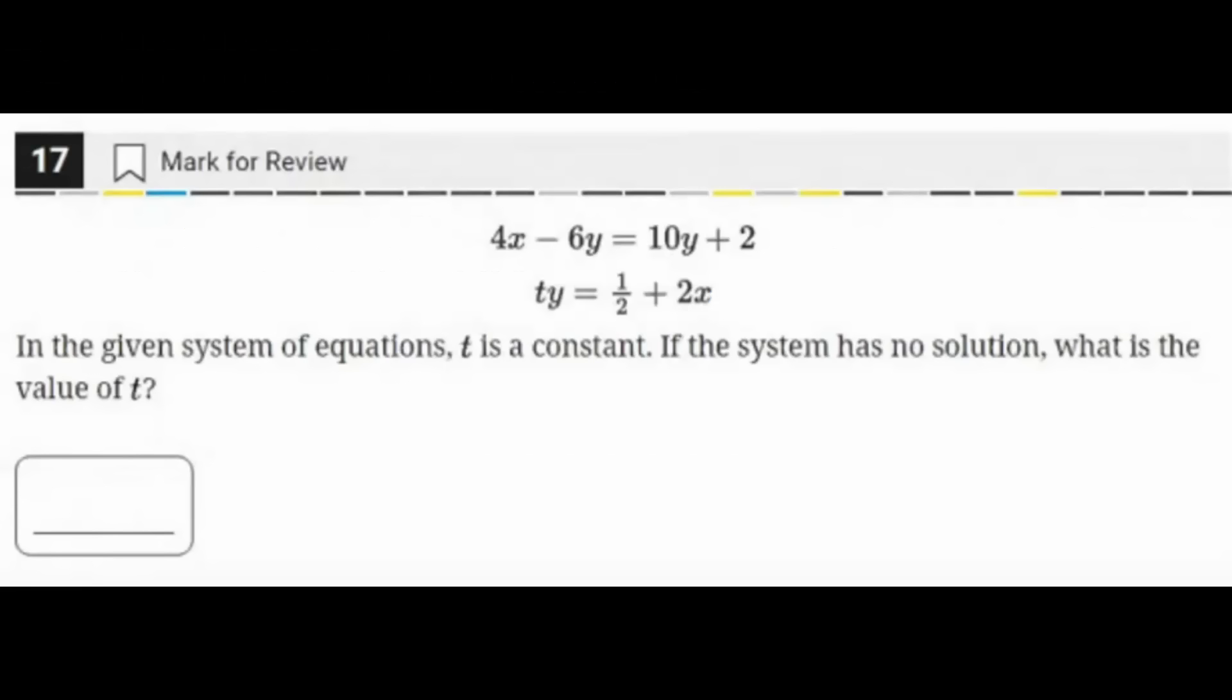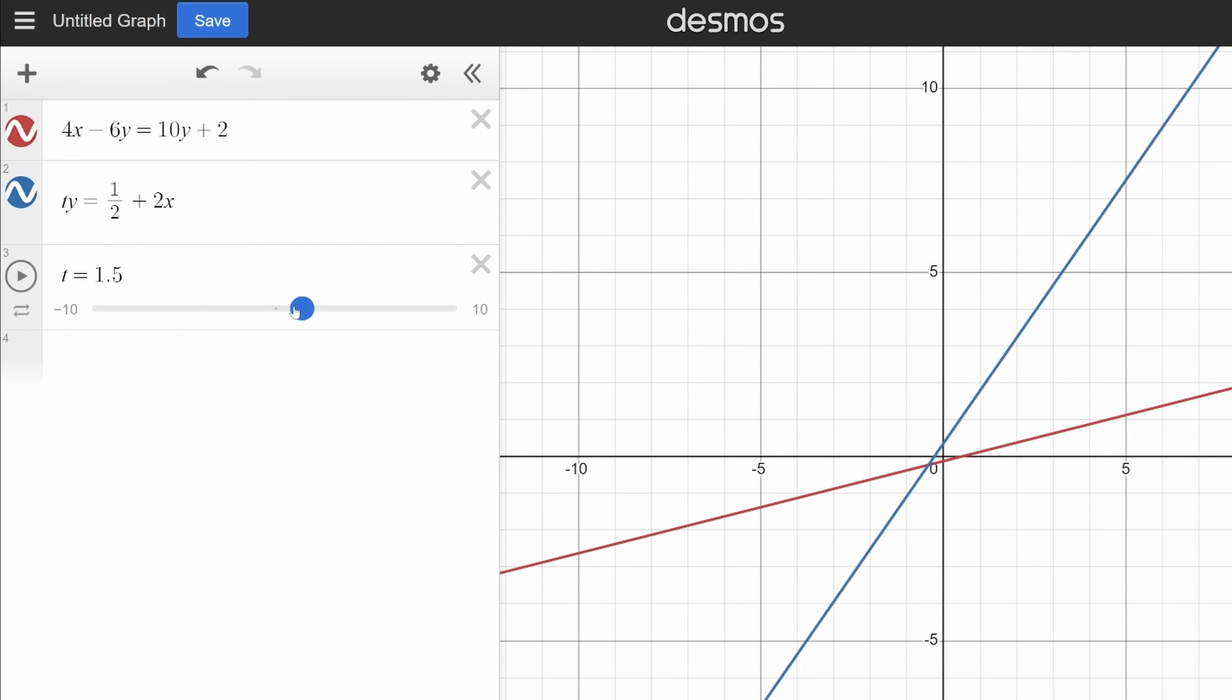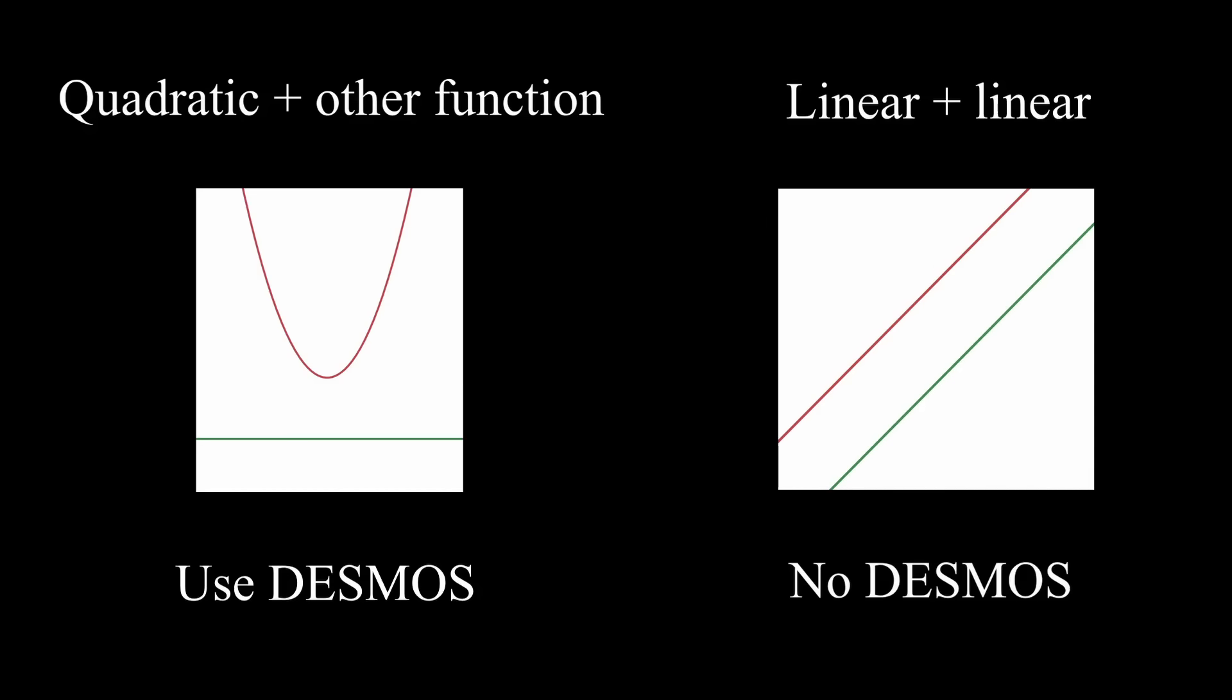Even if you get a harder variation of this type of problem, you can rearrange it into slope-intercept form and then set the slopes equal to each other. And yes, you can go into Desmos and move your slider around until the lines are parallel, but this is very imprecise and you're too likely to make an error. So again, use Desmos for no solutions to a quadratic, use paper and pencil for no solutions to a system of two lines.